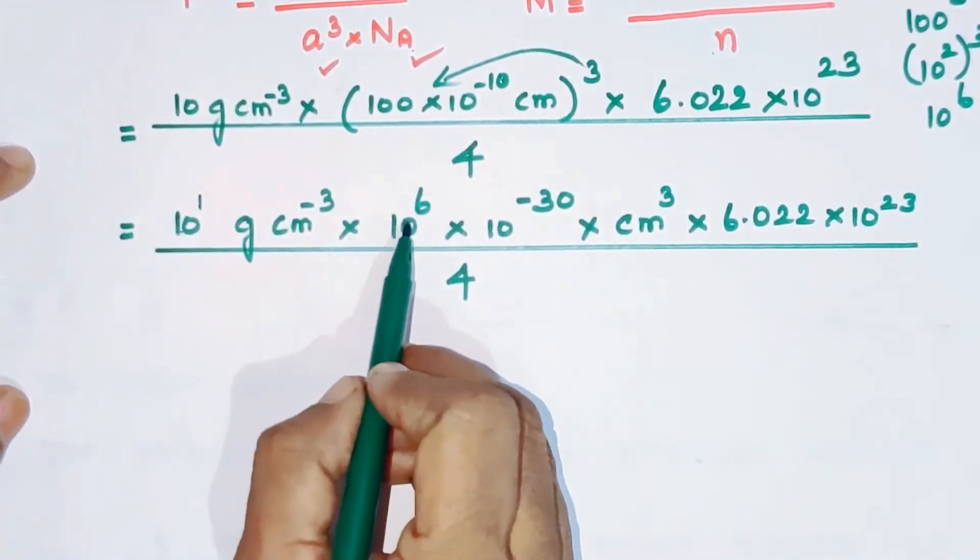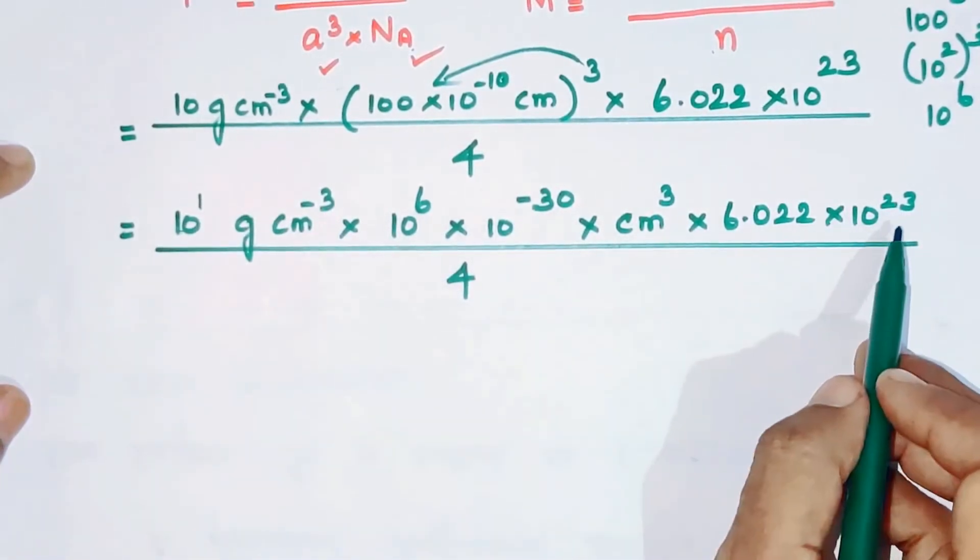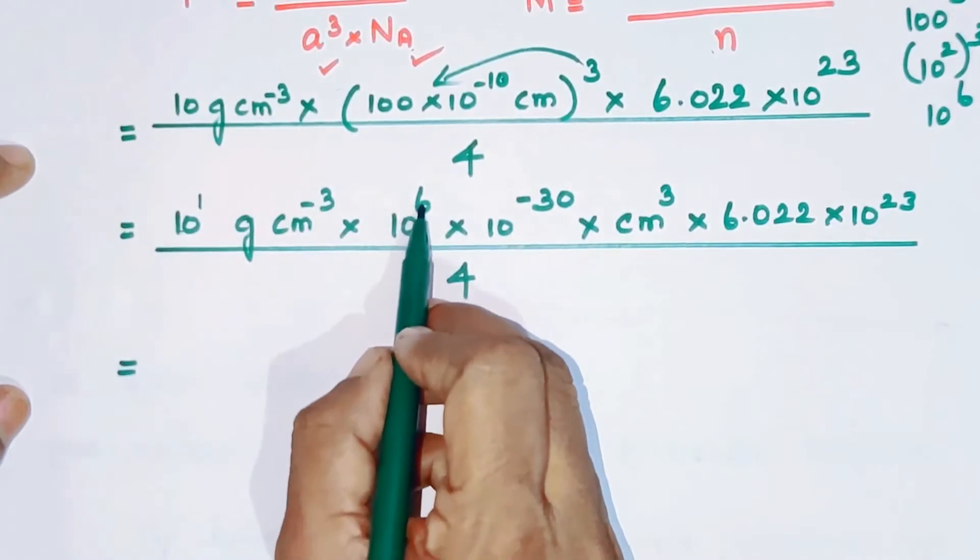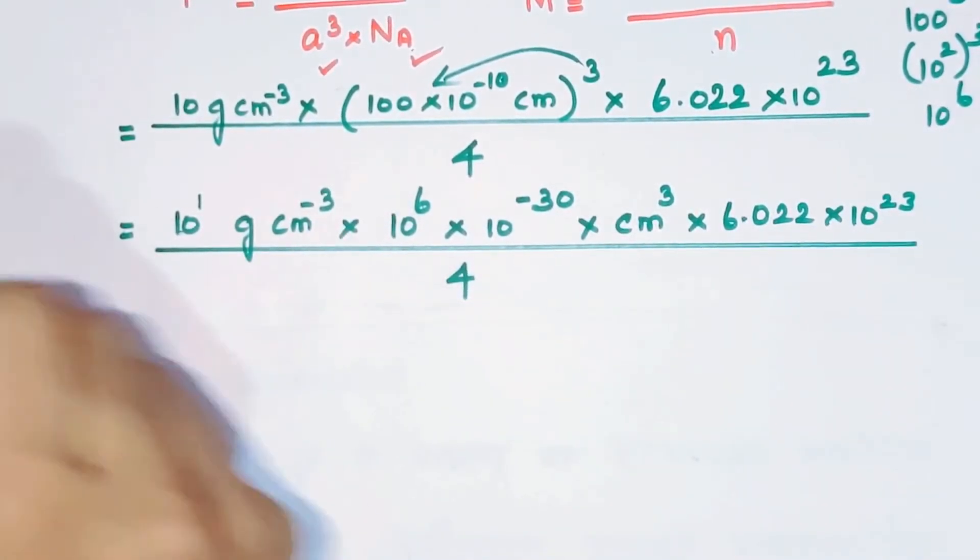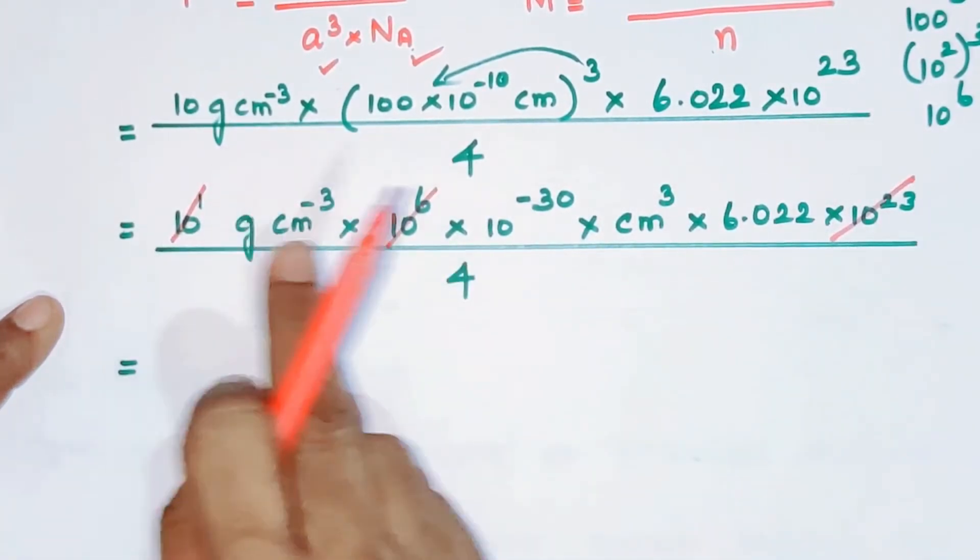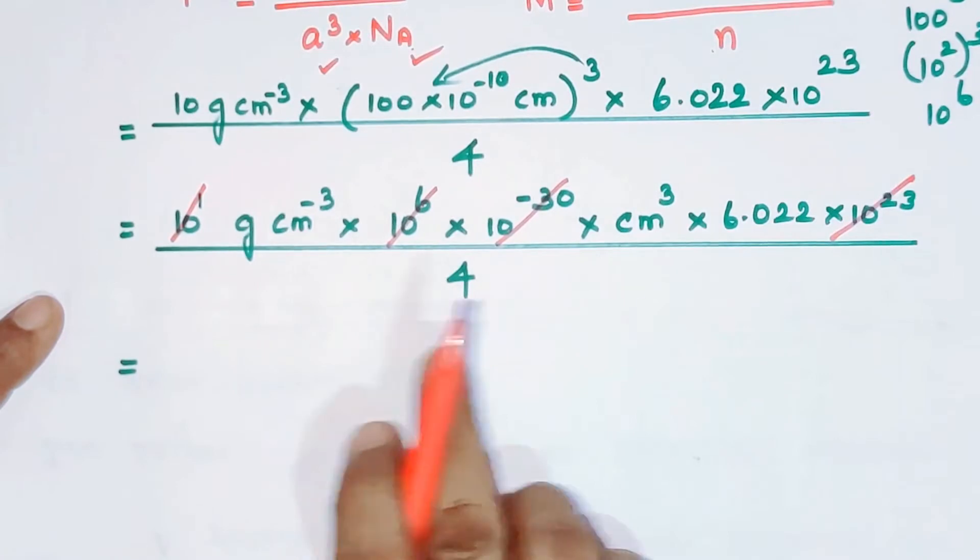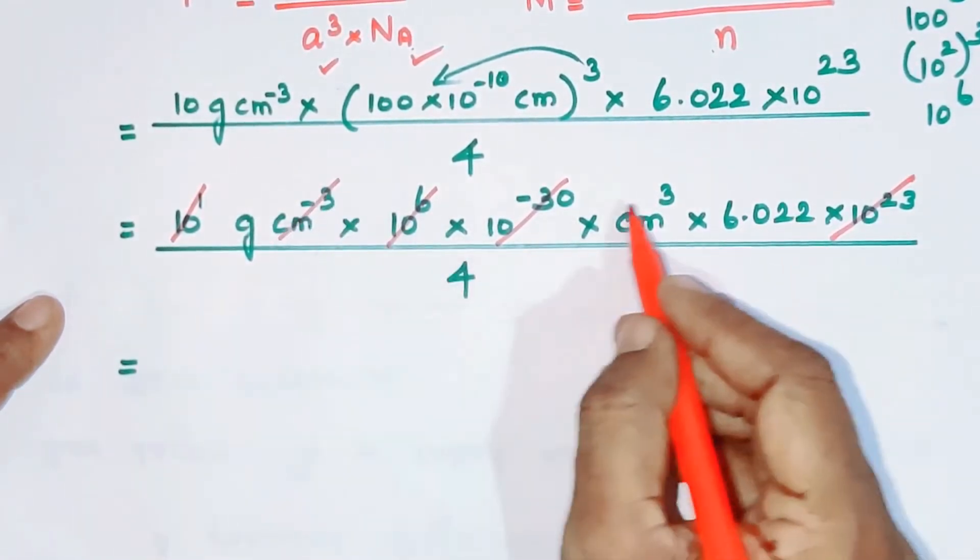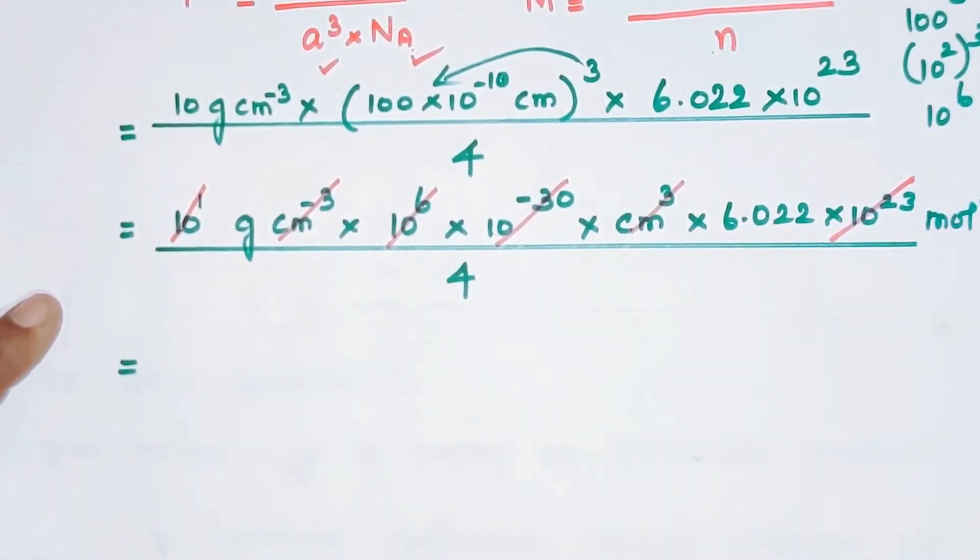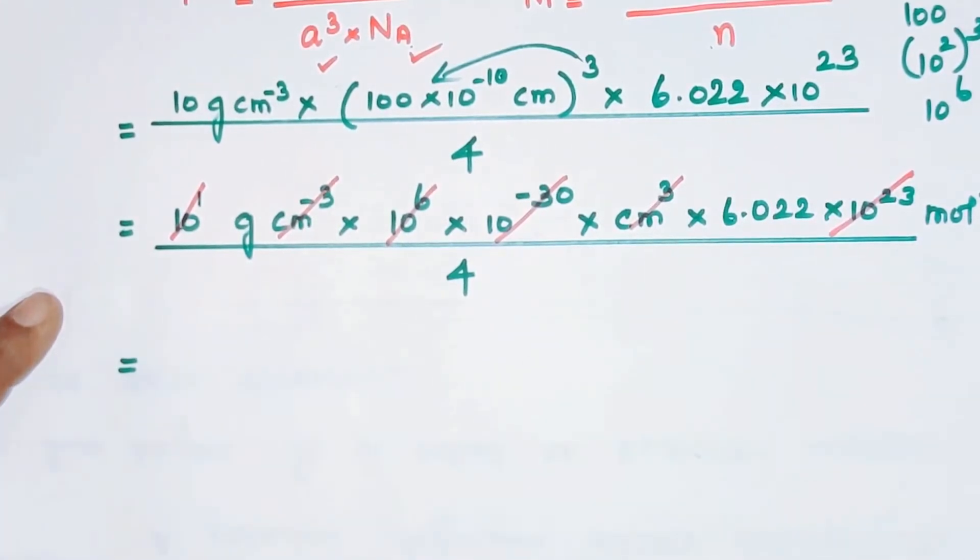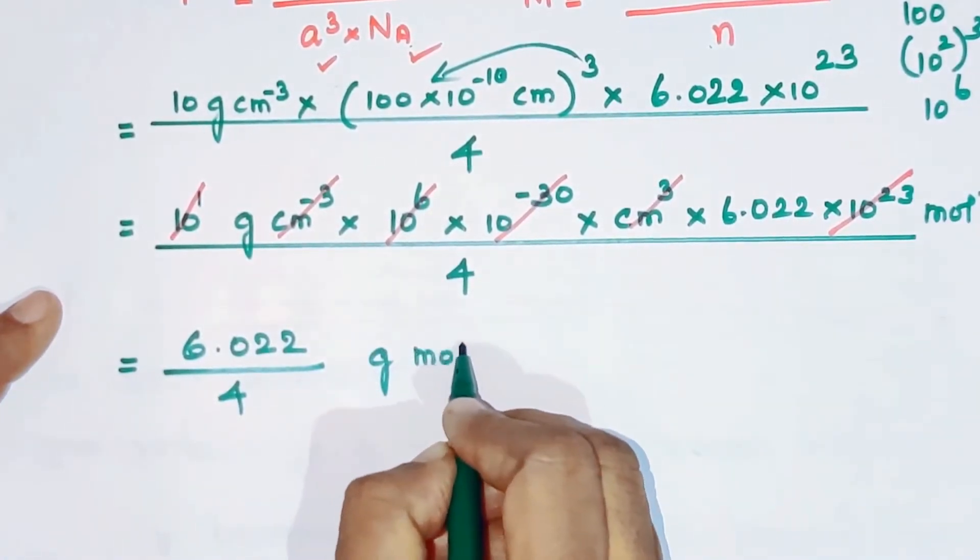Simplifying: 10 times 10 power 6 times 10 power minus 30 times 6.022 into 10 power 23 divided by 4. The powers add up: minus 30 plus 23 equals minus 7, plus 6 equals minus 1. The centimeter cube cancels, leaving gram per mole.